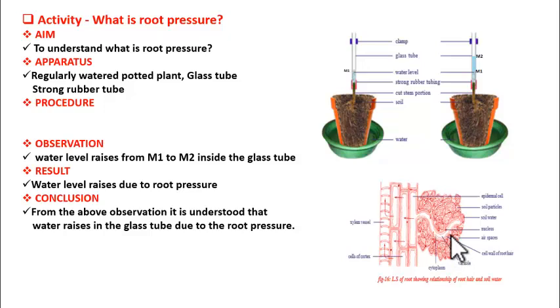Water from soil particles first enters into root hairs, and these root hairs pass this water into xylem vessels. As there are thousands of root hairs pumping water into xylem vessels, there arises a pressure called root pressure. Due to this root pressure, water raises in the xylem vessels and that water comes out through the stem, raising the level in the glass tube.